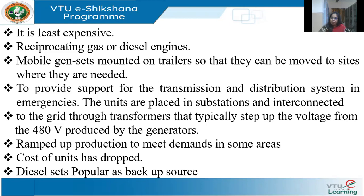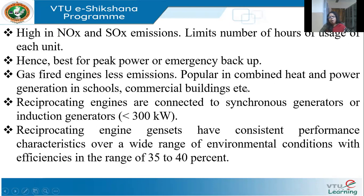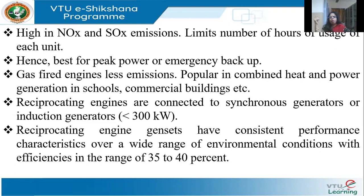Diesel gensets have become a very popular backup source. However, they are very high in nitrous oxide and sulfuric oxide emissions, so their hours of usage are limited — you can't use them 24/7 throughout the year. This is not a renewable source of DG because you are using diesel or gas. Because of their limited hours of usage, it's difficult to use these plants for base load — they are preferred for peak load or emergency backup.